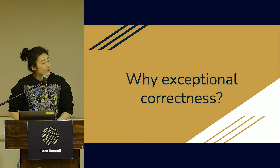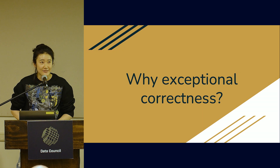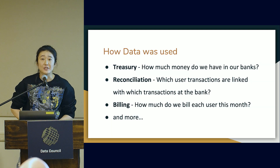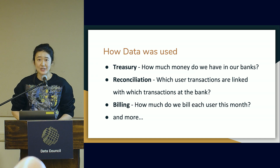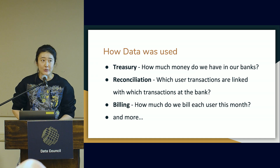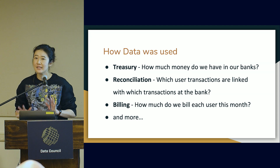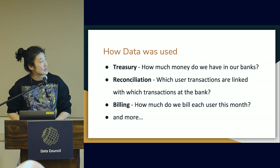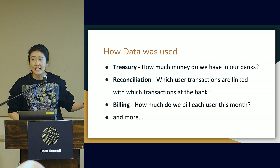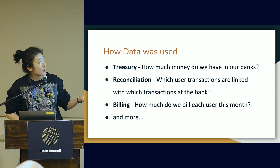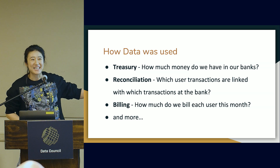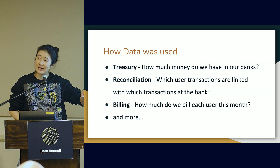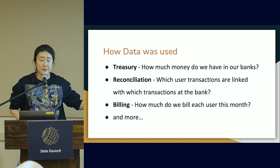So why exceptional correctness? Why does that even matter? The reason is because Stripe deals with financial data. We deal with transactions, we deal with actual money. It's very important that we do things correctly — it's not like a social media platform where it's clicks or impressions and can be a little fungible. It has to be absolutely correct. Some of the systems that run on data at Stripe, even as early as 2017, were treasury, reconciliation, billing, and a lot more. Literally, if our data platforms didn't work, we wouldn't know how much money we had in our banks.